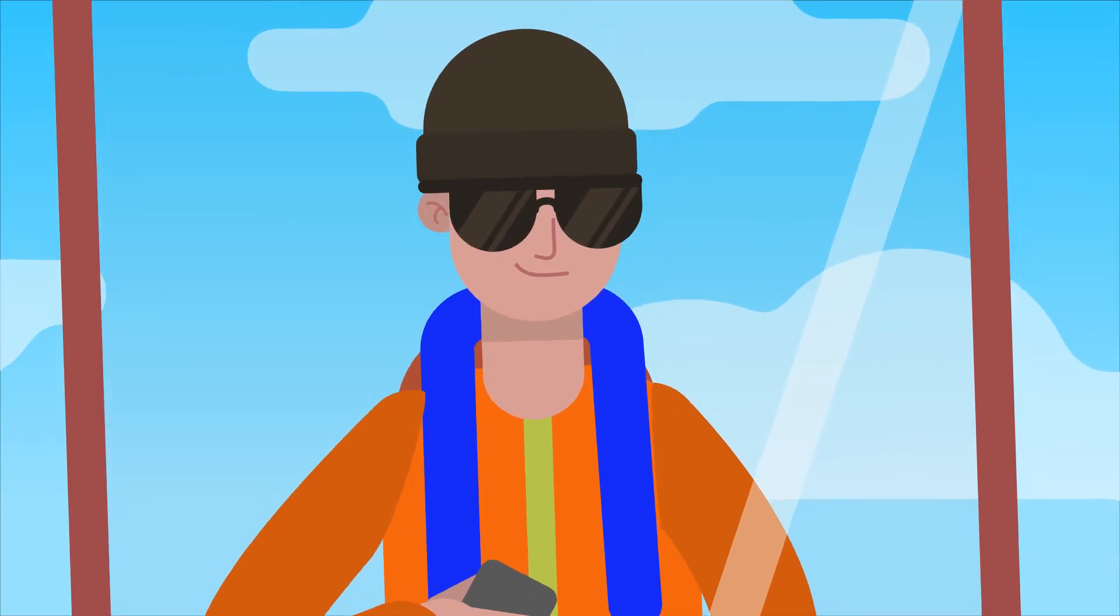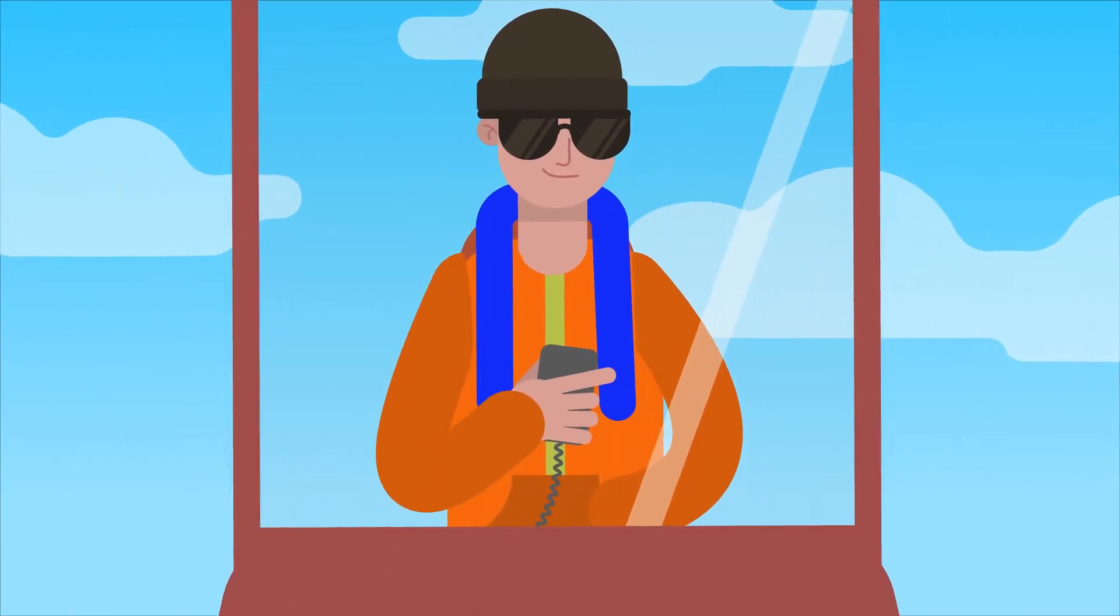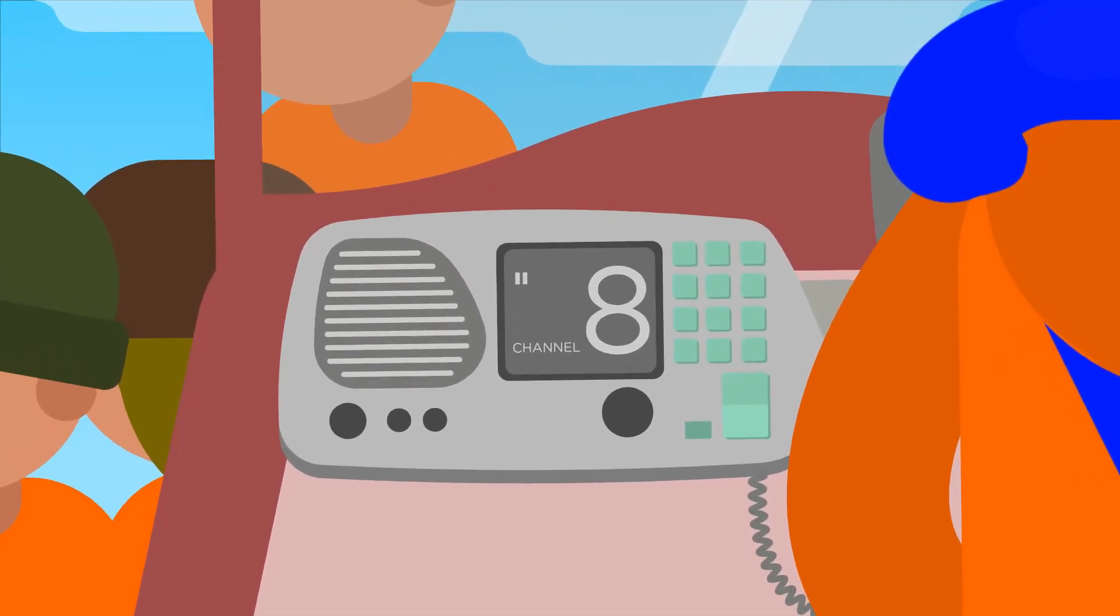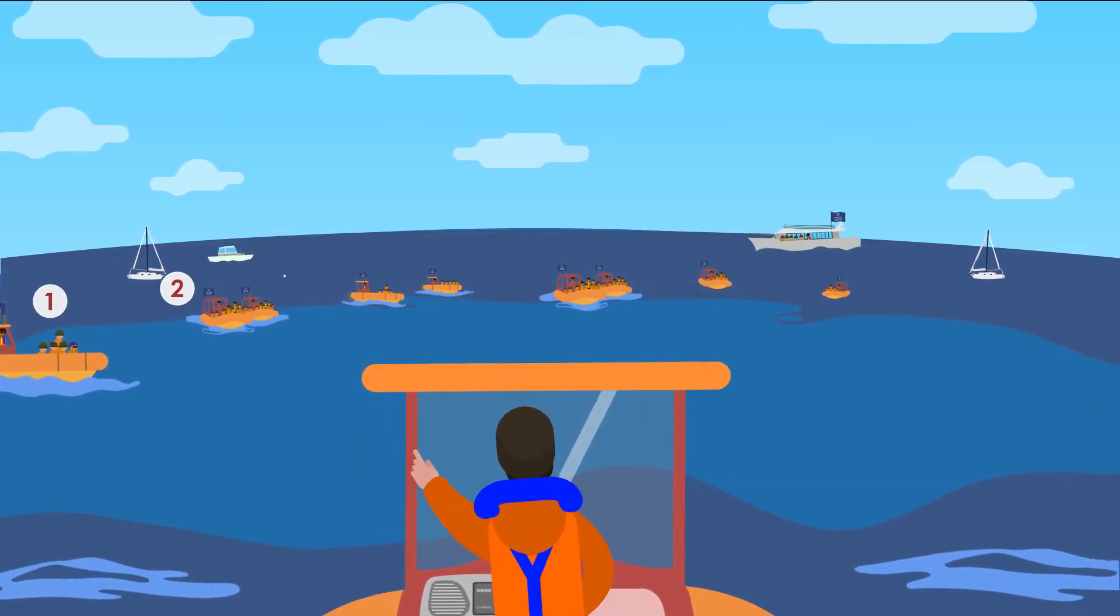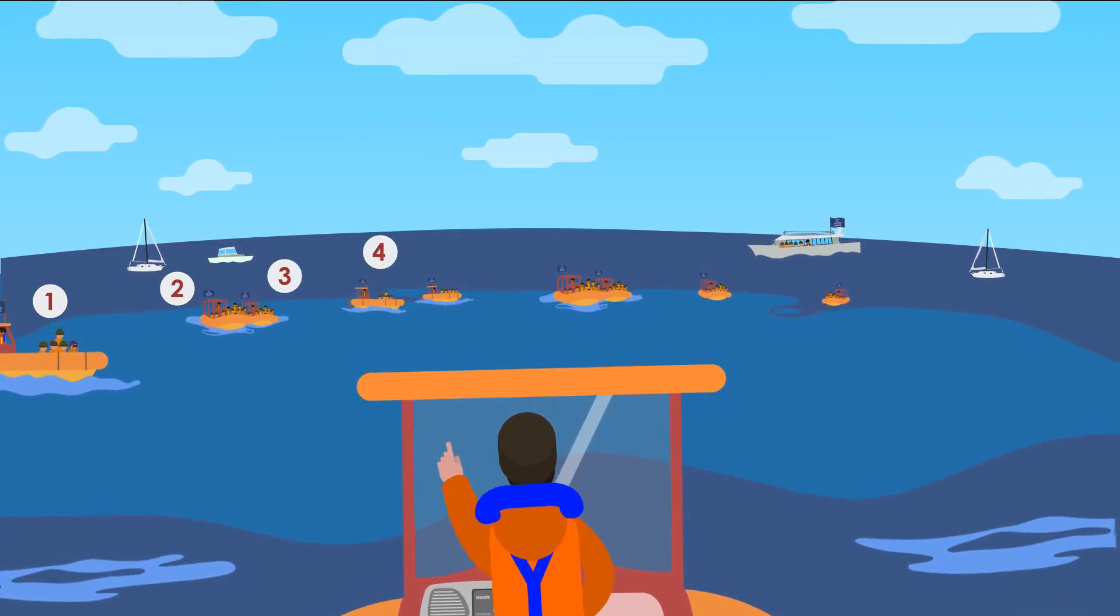First, before you arrive in the observation area, call your colleagues on Channel 8 in order to know how many Class 1 boats are present. Remember that a maximum of 10 sea excursion boats are authorized in an observation area.